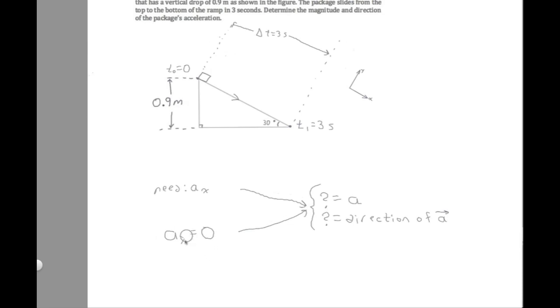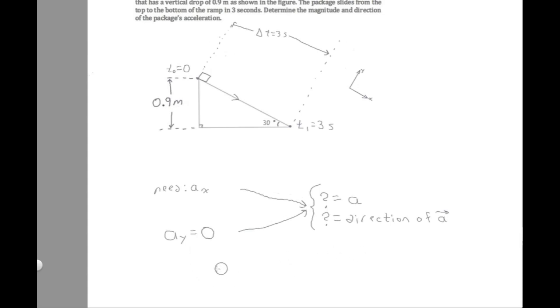The object is motionless in the y component, meaning it has a constant v_y of zero. When v_y is constant, a_y is zero — that's the technical reason. Note that the x and y axes here are not vertical and horizontal as in many problems. In this problem it was convenient to use a slanted x-axis and therefore a slanted y-axis. So we say the y component of the acceleration is zero, or a_y = 0.